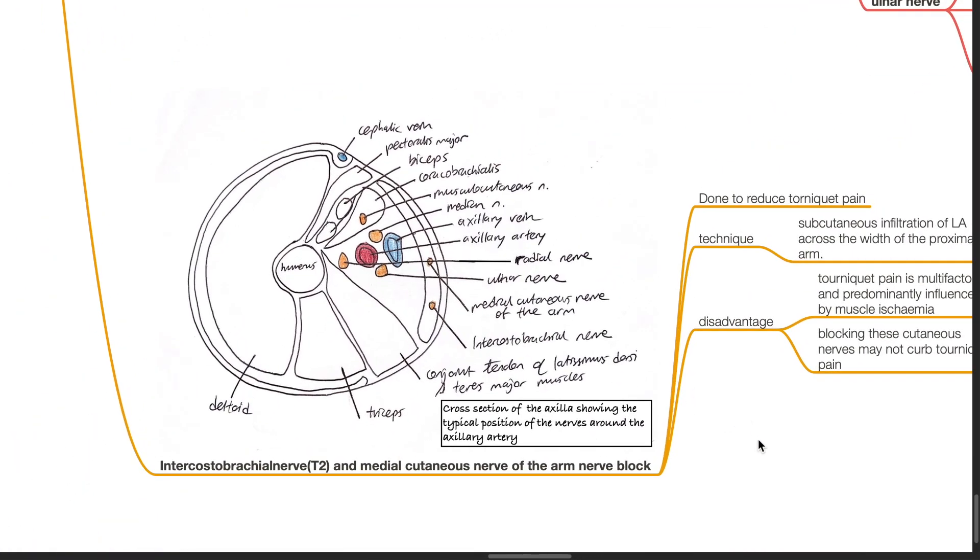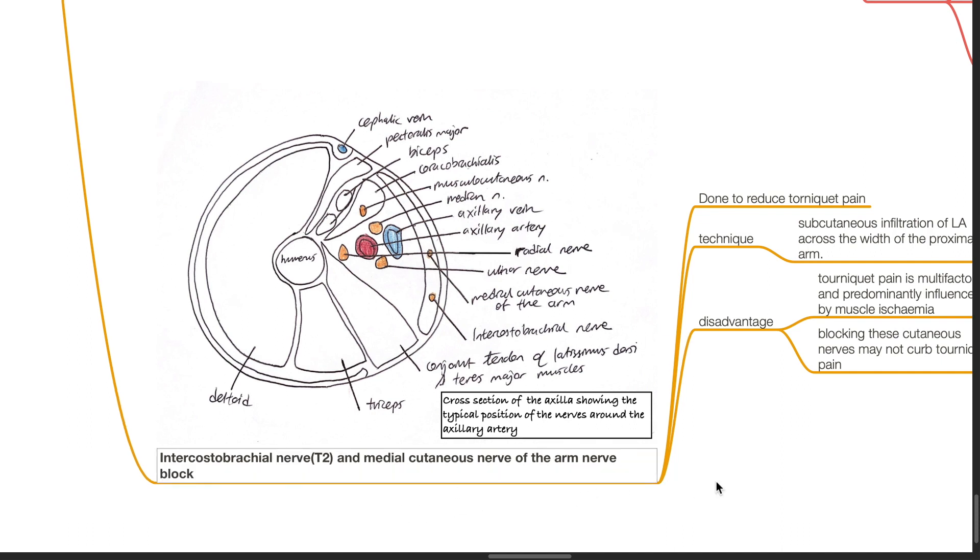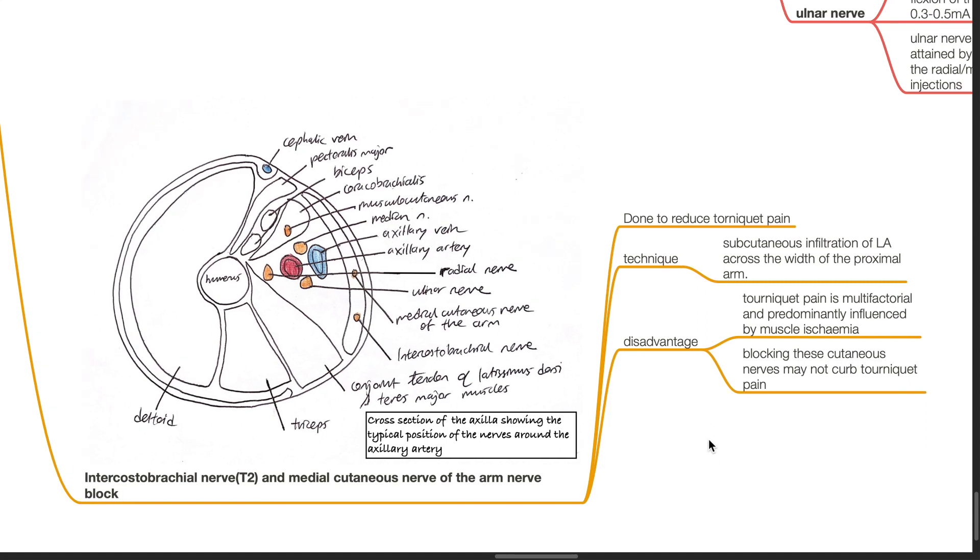The intercostal brachial nerve and the medial cutaneous nerve of the arm nerve block is done to reduce tourniquet pain. Technique: subcutaneous infiltration of local anesthetic across the width of the proximal arm. Disadvantage: tourniquet pain is multifactorial and predominantly influenced by muscle ischemia, and blocking these cutaneous nerves may not curb tourniquet pain.